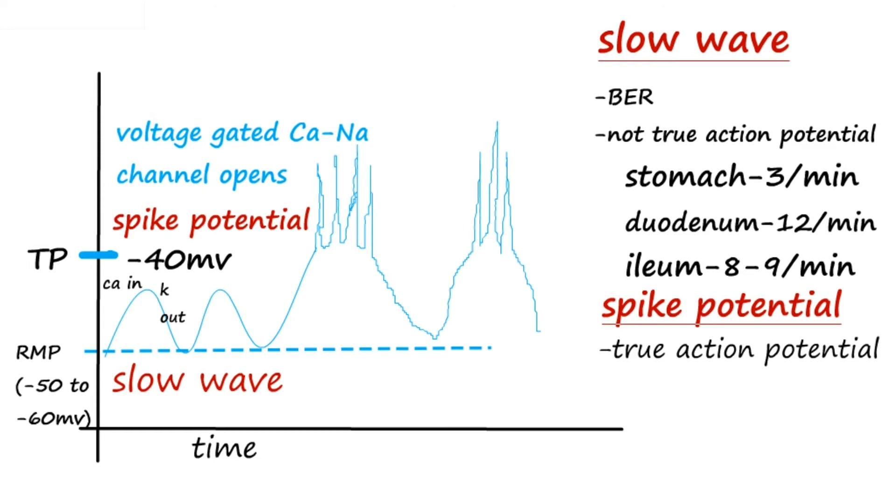The number of spike potentials produced depends upon how long the slow wave remains above threshold, and the frequency as well. You must have noticed it's the influx of calcium that causes the action potential, and not the sodium ions as in the large nerve fibers.